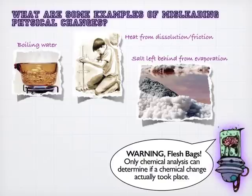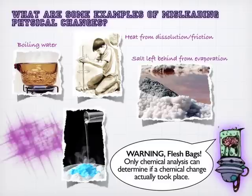Heat can be produced when things are dissolved. For instance, if you take something like calcium chloride and dissolve it in water, it will produce heat. Again, that's just from the process of dissolution. Nothing new chemically is being created. Friction is another good example of heat being produced without chemical change.